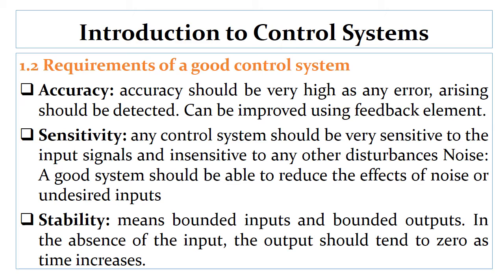Another requirement is stability. Stability of a control system is defined as the ability of any system to provide a bounded output when a bounded input is applied to it. It is considered an important property of a control system. Stability is also referred to as the system's ability to reach the steady state.